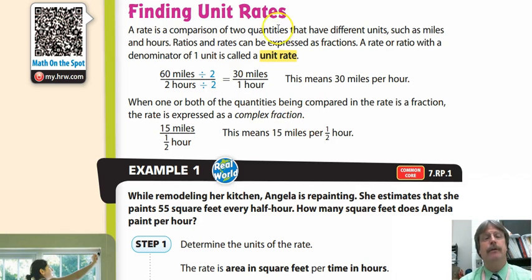The next section, finding unit rate. A rate is a comparison of two quantities that have different units. Ratios and rates can be expressed as fractions. A rate or ratio with a denominator of one is called a unit rate.